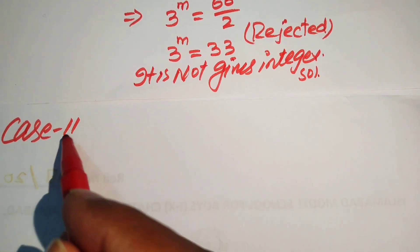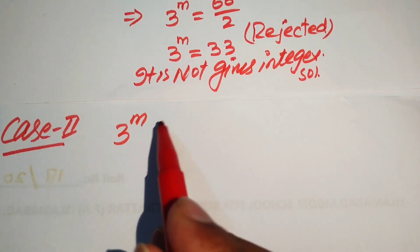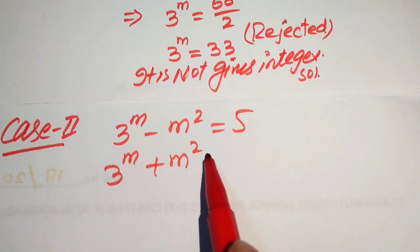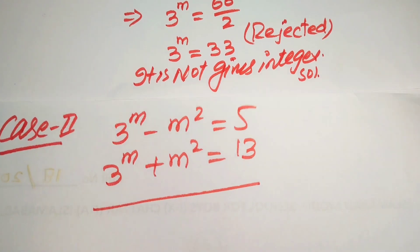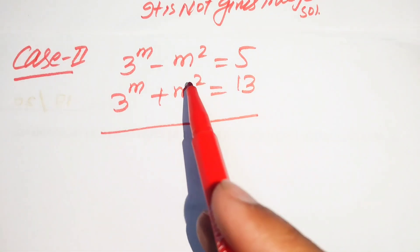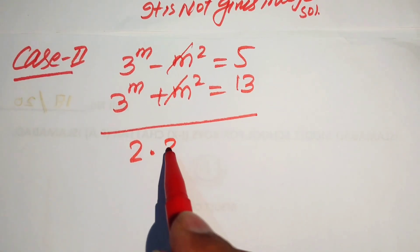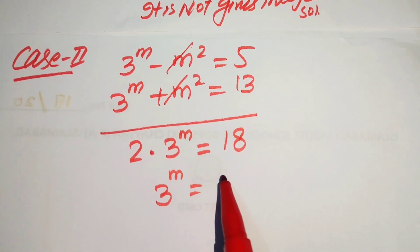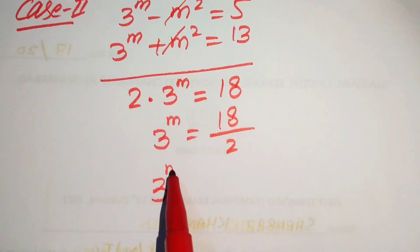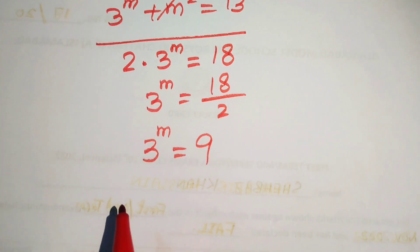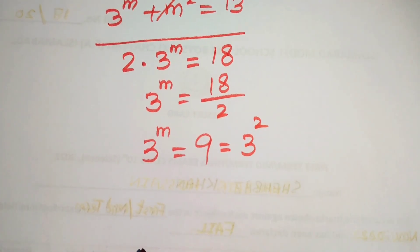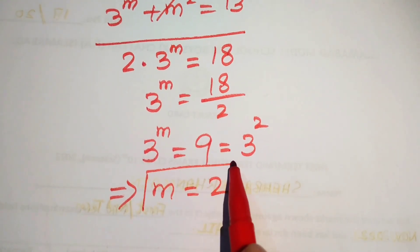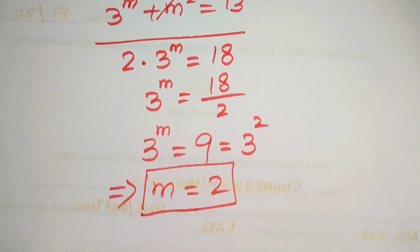In Case 2, adding the two equations gives 2 times 3 to the power of m equals 18, so 3 to the power of m equals 9. Rewriting 9 as 3 squared, we compare both sides and get m equals 2. This is the final answer.